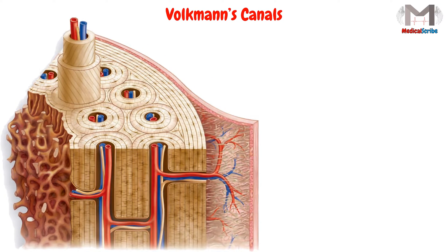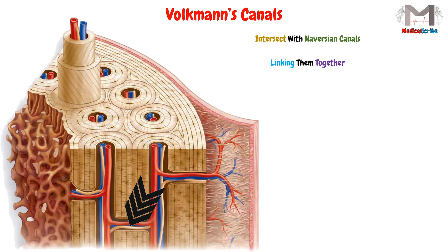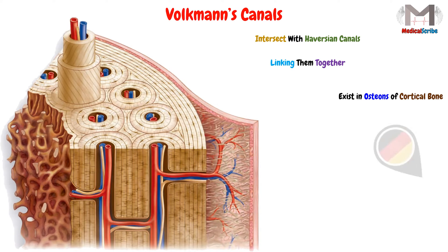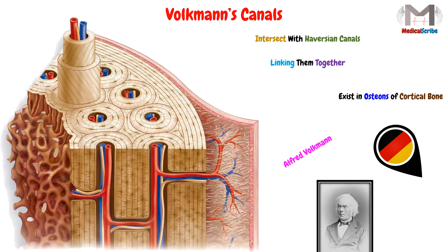Volkmann's canals are channels that intersect with the Haversian canals, linking one Haversian canal with the other Haversian canals, and they exist in the osteons of the cortical bone. These canals were given this name after the German scientist Alfred Volkmann.